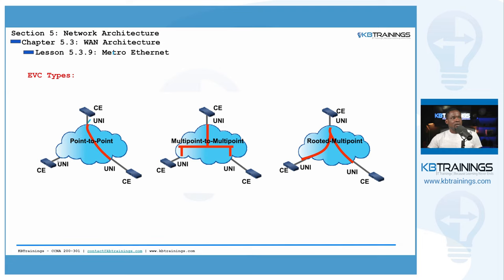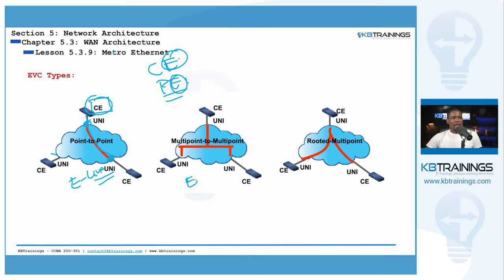These can all be represented in diagrams. CE means customer equipment — or customer edge — and PE means provider equipment or provider edge. For E-Line, a CE connects to a UNI with a single EVC going to the other UNI representing point-to-point connectivity. For E-LAN, three UNIs are all connected to the same EVC so they can talk to each other. The rooted multipoint diagram represents the E-Tree, where the hub site connects to the satellite sites.